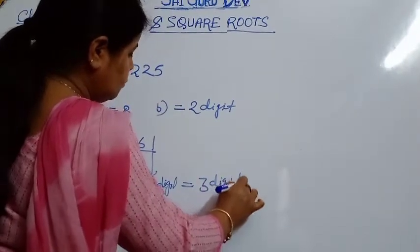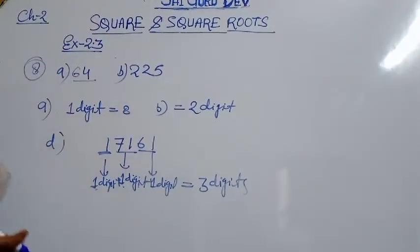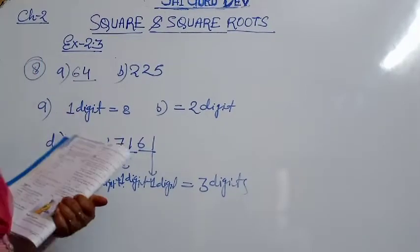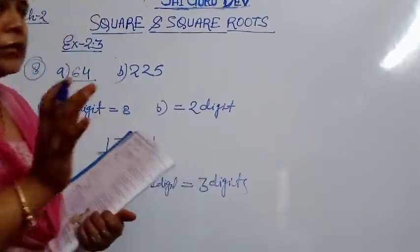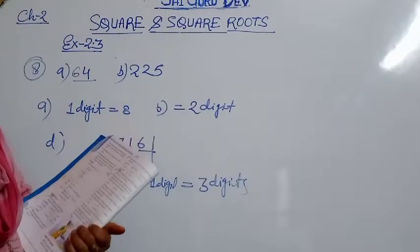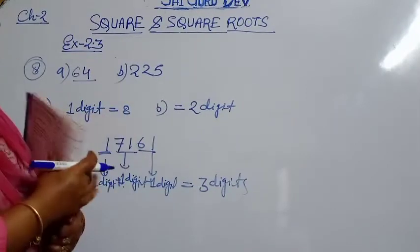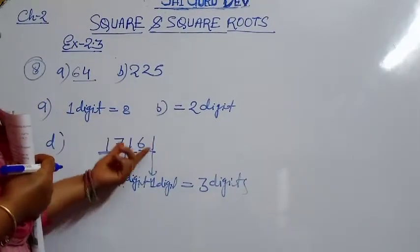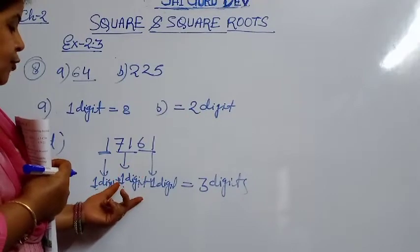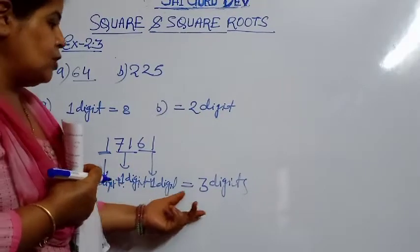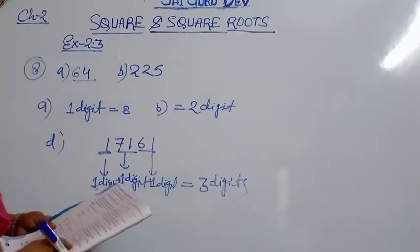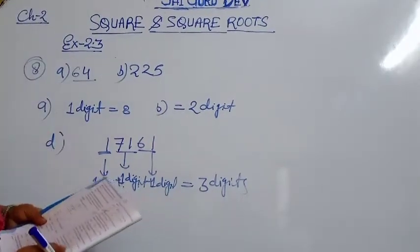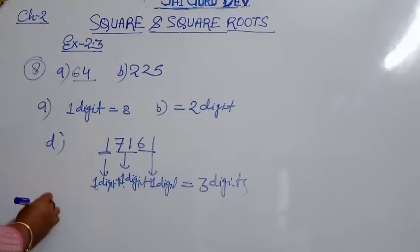Now everybody should understand what we are doing. We are not actually finding the square root — we only need to say how many digits the square root will have. One more part I am doing, that is part E.